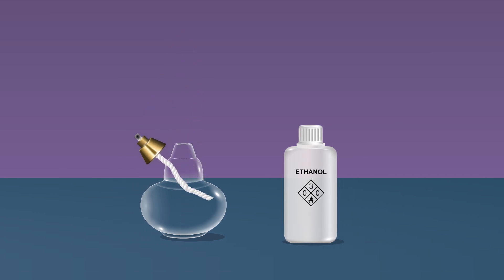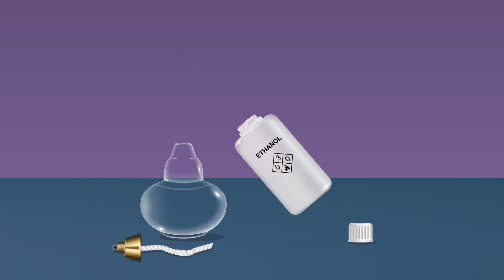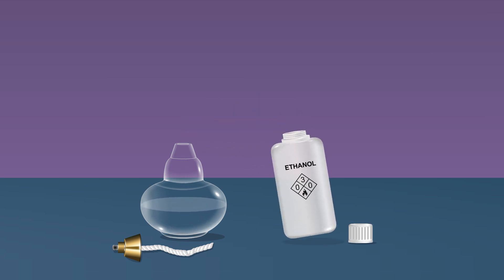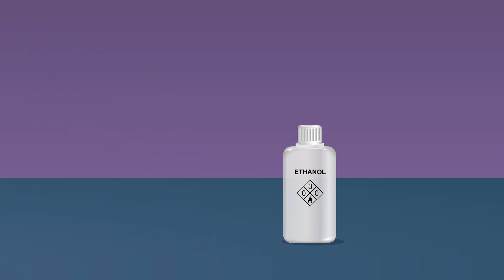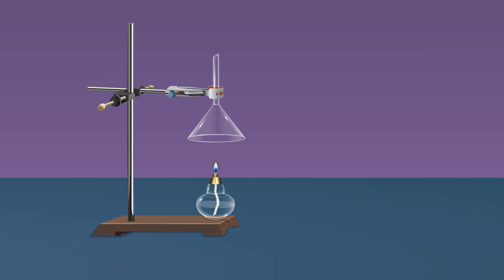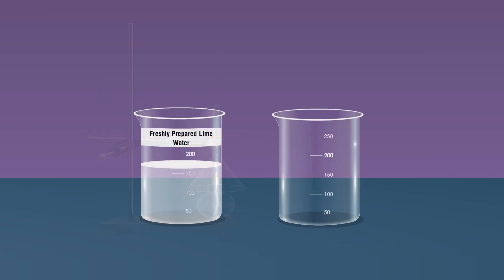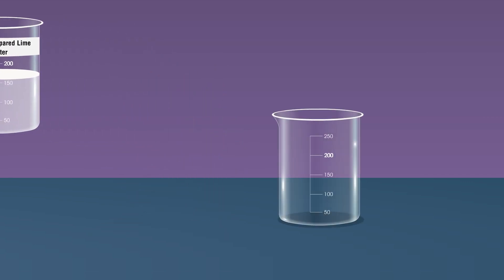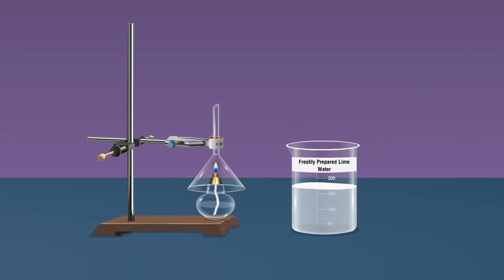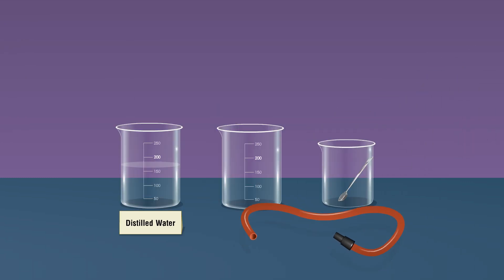Take ethanol as fuel in a spirit lamp, ignite it using a lighter, and cover the lamp with an inverted funnel using a clamp as shown. Take freshly prepared lime water which is kept in a beaker and take rubber tubing.